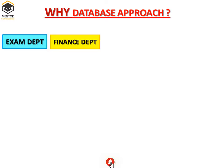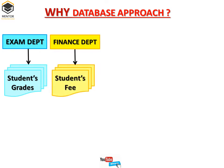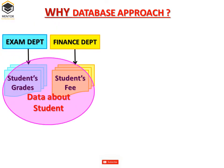Let's take an example. One user from the examination department and another user from the finance department. The examination department may keep files on students and their grades. Programs to print student transcripts and to enter new grades are implemented as part of the application. The finance department may keep track of student fees and their payments.